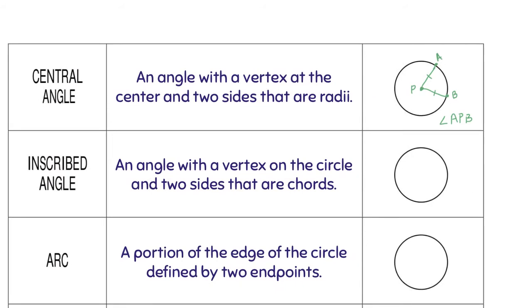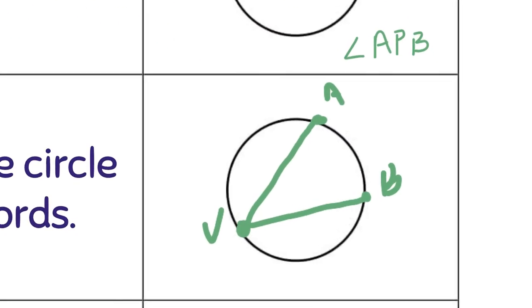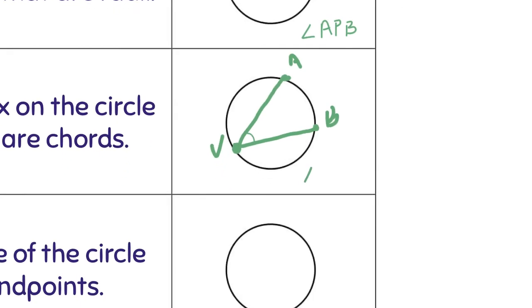So obviously it's called central because it touches the center. The next type of angle is an inscribed angle. So this time, a vertex that's on the circle. So let's just say right here, point V. And two sides that are cords. Remember, cords are points that touch the circle. So these will not necessarily be the same, but that's my inscribed angle, A, V, B.